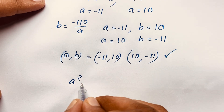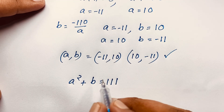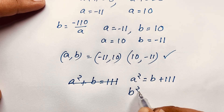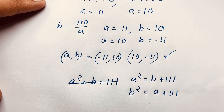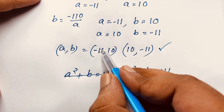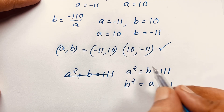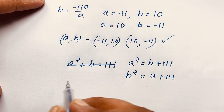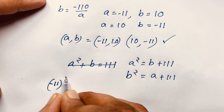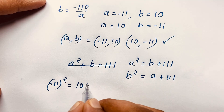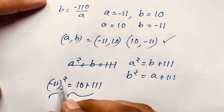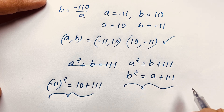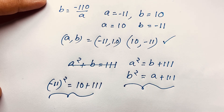Let's verify our answer. Our question states a squared equals b plus 111. Taking a equals minus 11: (minus 11) squared equals 121, and b plus 111 equals 10 plus 111 equals 121. Both sides are equal, confirming the solution is correct. The left-hand side and right-hand side are both equal in this German Math Olympiad question.